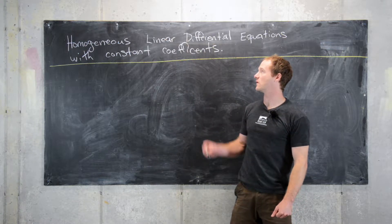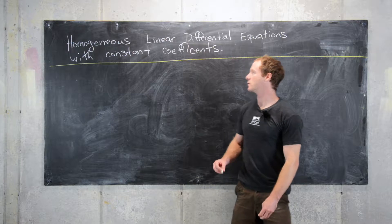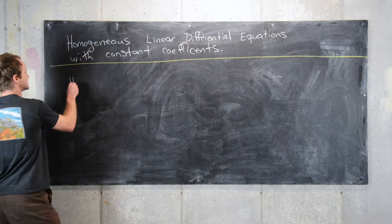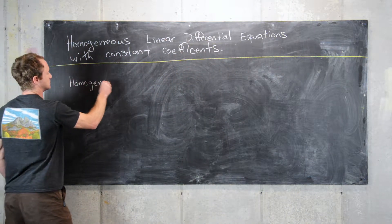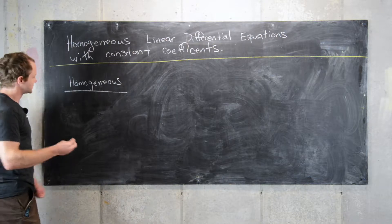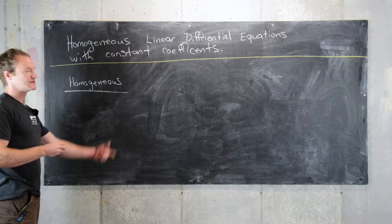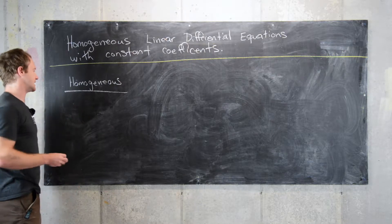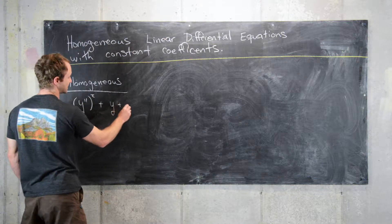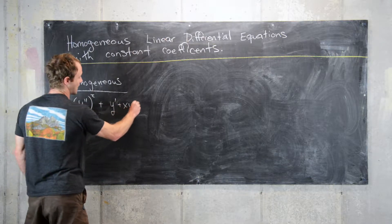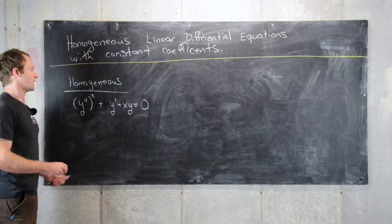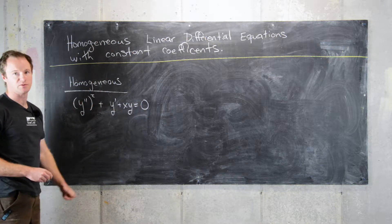In this video we're going to look at the basics of homogeneous linear differential equations with constant coefficients. Homogeneous means that there are no free functions — in other words, all differential equations may be set equal to zero, and everything on the other side of the equation has a y in it. For example, y'' + y' + xy = 0: on the left-hand side we have terms with y's, and on the right-hand side we have zero.